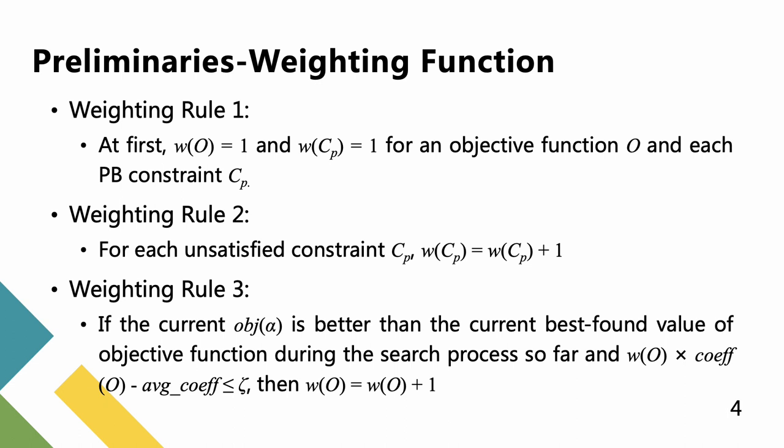Weighting rule 1: At first, w(O) equals 1 for an objective function O, and w(Cp) equals 1 for each PB constraint Cp. Weighting rule 2: For each unsatisfied constraint Cp, w(Cp) equals Cp plus 1. Weighting rule 3: If the current objective value is better than the current best found value during the search process so far, and the formula is satisfied, then w(O) equals w plus 1.